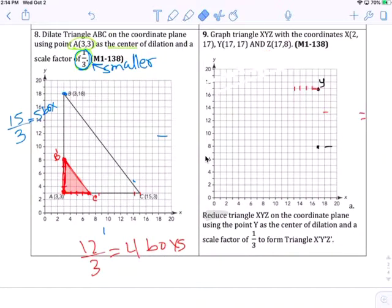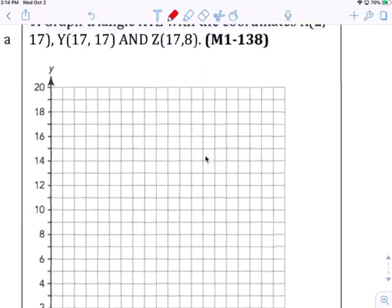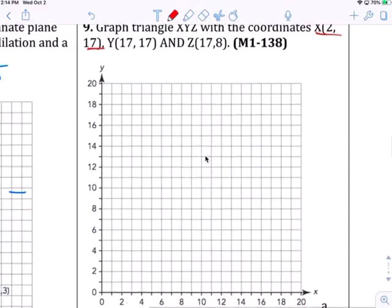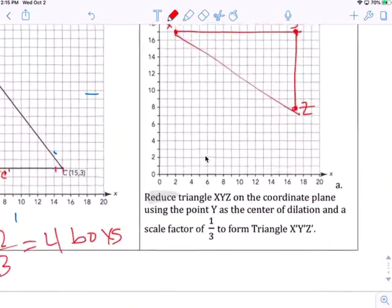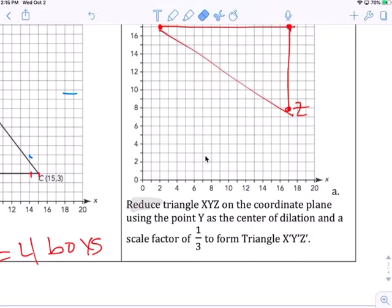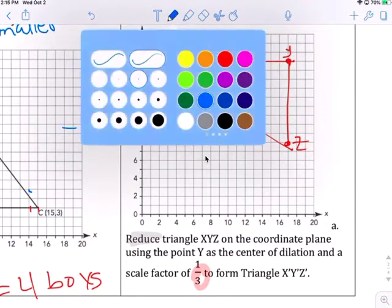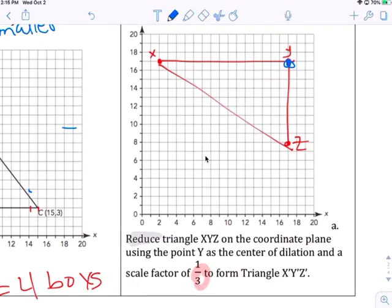You do the same thing to this one. So graph X 2, 17, right there. Y is 17, right there. And then 17, 8, it's right there. Reduced triangle, we can have a reduction, so it's a fraction on the coordinate plane using point Y as the center. So you're going to use this one again and a scale factor of a third. That means divide by 3.